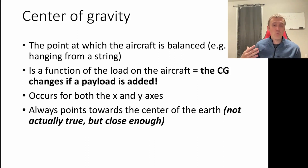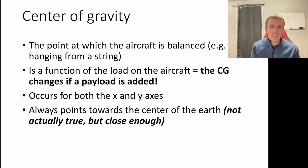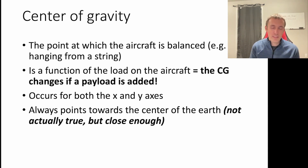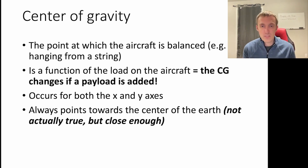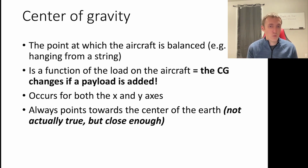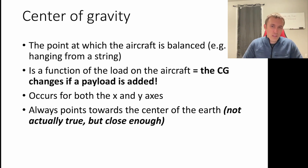The center of gravity exists in both axes — from side to side and front to back on the aircraft, there is a point in 2D space which is the location of that center of gravity. Weight always acts in the direction pointing towards the center of the earth — though technically it follows the local gravity direction along the geoid, which is the earth's gravity potential surface. Gravity potential surfaces don't necessarily point exactly towards the center of the earth, but it's close enough for our purposes.